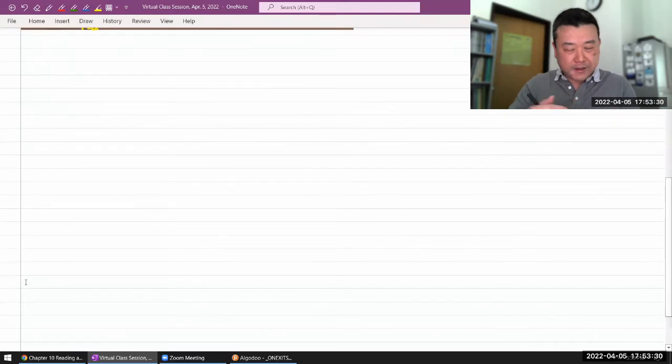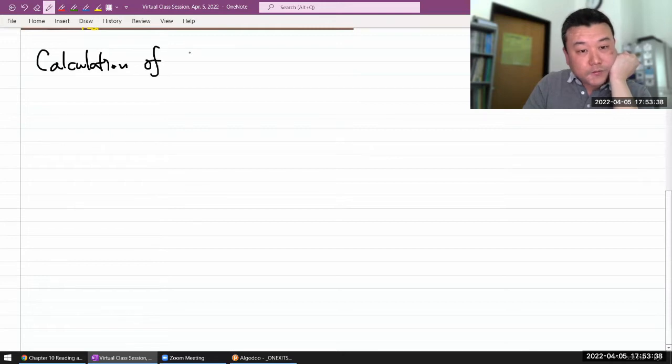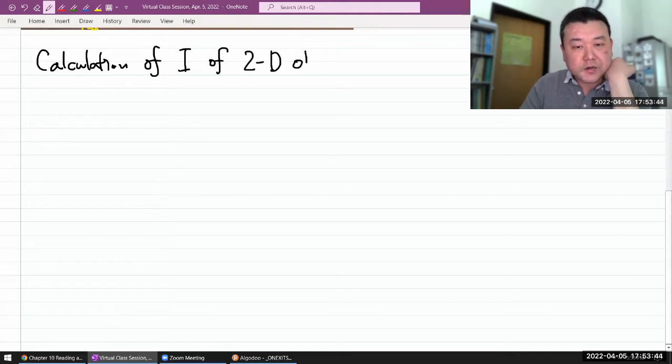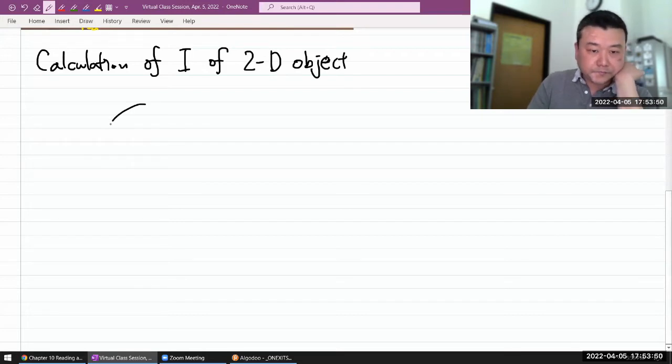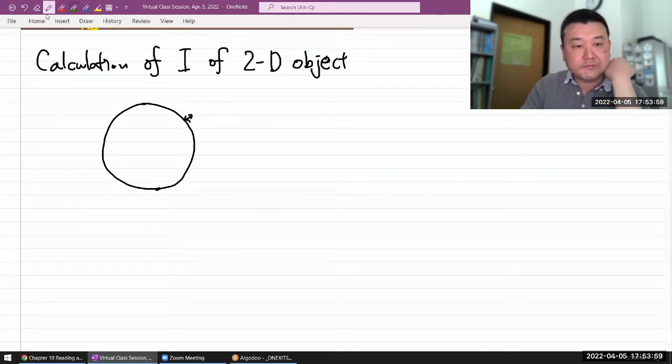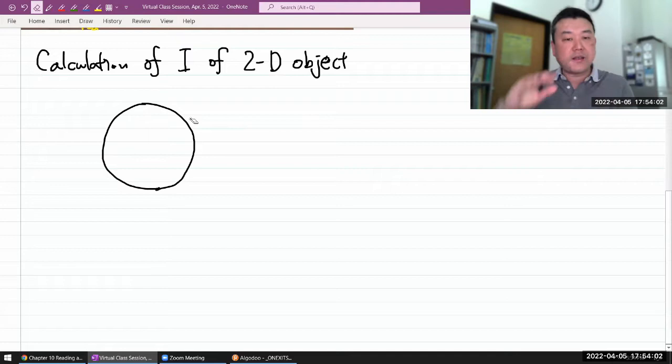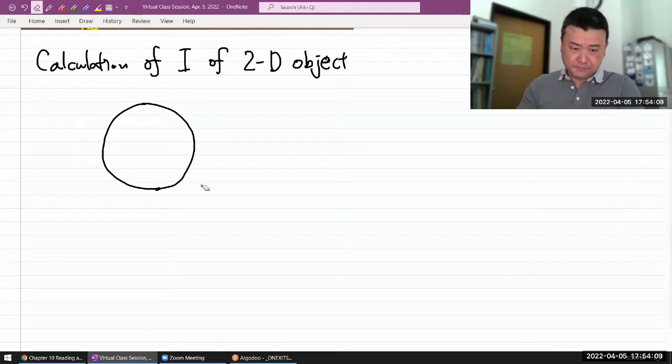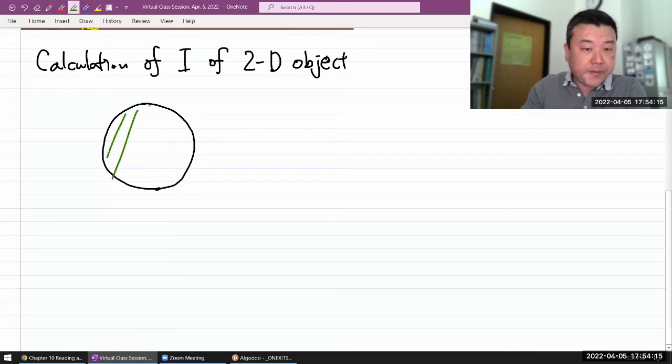So, let me sketch this out. What I want to show you is the calculation of rotational inertia of a two-dimensional object. Here, what we are imagining is something like a disk. And we are going to say it's so thin that whatever its thickness is, it's negligible.